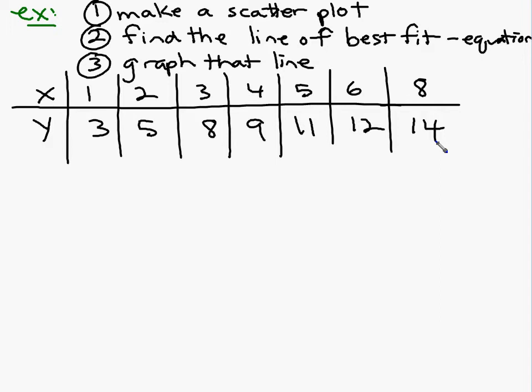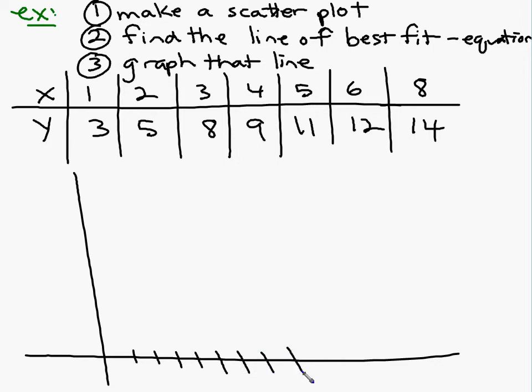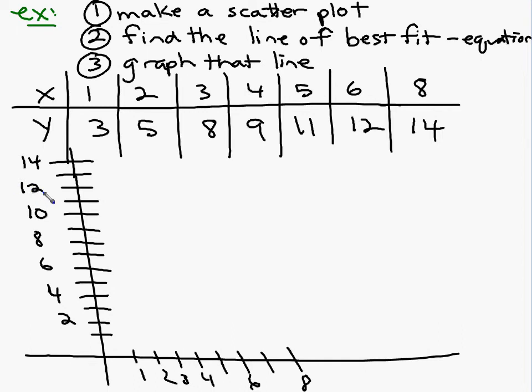The X values are one, two, three, four, five, six, and eight. The Y values are three, five, eight, nine, 11, 12, and 14. So they give you a table of values and the first thing they ask you to do is make a scatter plot. Aren't these easier numbers to work with than our last one? I told you if we could do a hard one, we could do an easy one. So we only have to go up to eight on my X's. On my Y's, I only need to go up to 14.